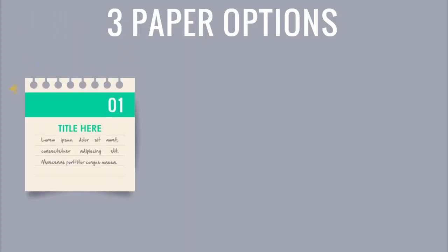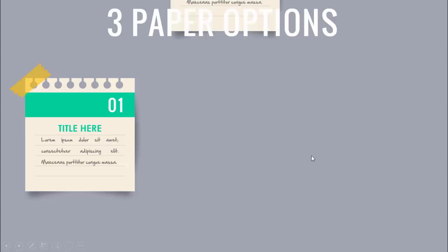In today's tutorial I'm going to show you how to create a three paper options infographic slide in PowerPoint. When I click, the first option comes — you can see the paper cut effect at the top, ticked with a cello tape. I've created a color ribbon with option number one where you can add a title and detail text, and I've given a shadow effect at the bottom and right side.